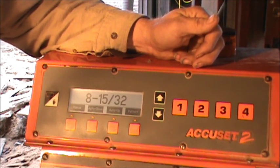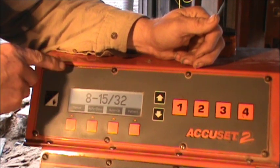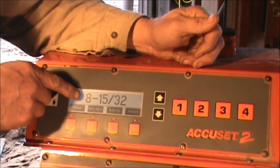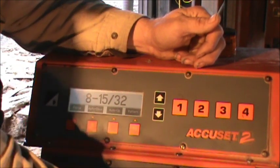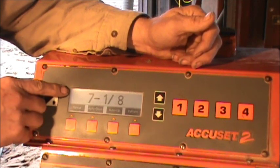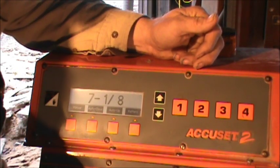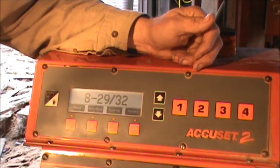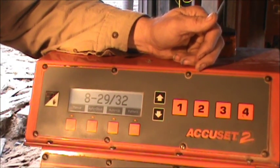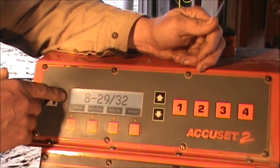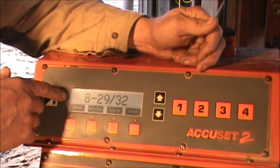Again, what this unit does is measure the distance between the blade and the bed of the mill. And the up-down lever, as it changes, this dimension here changes. And you can easily read that. That is the most basic mode. That's not really doing anything for you other than giving you an exact readout to a 32nd of an inch of where the saw blade is to the bed.